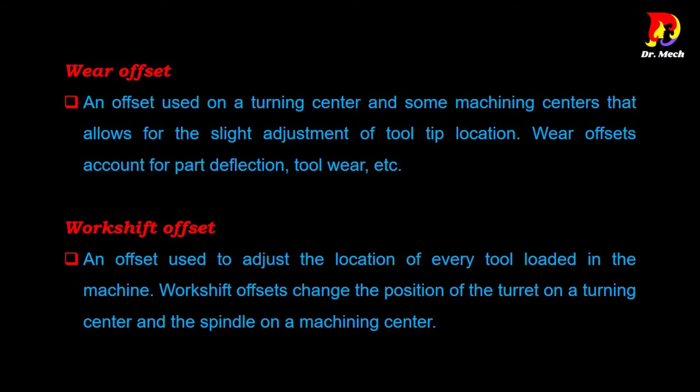Work shift offset is an offset used to adjust the location of every tool loaded in the machine. Work shift offsets change the position of the turret on a turning center and the spindle on a machining center. This offset moves the turret or main spindle of the machining center away from the machine origin.